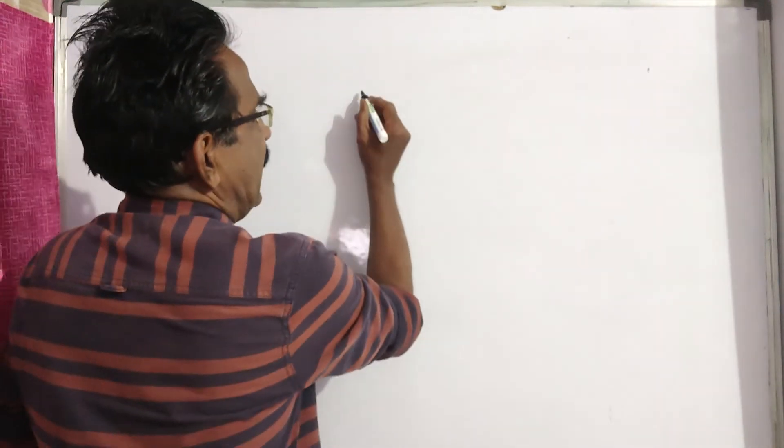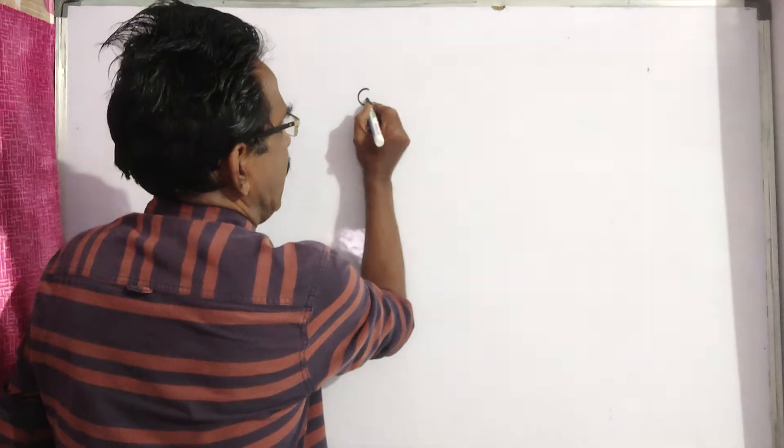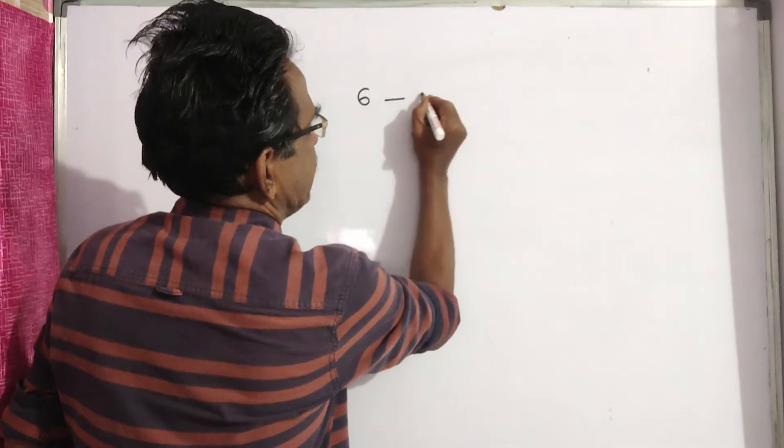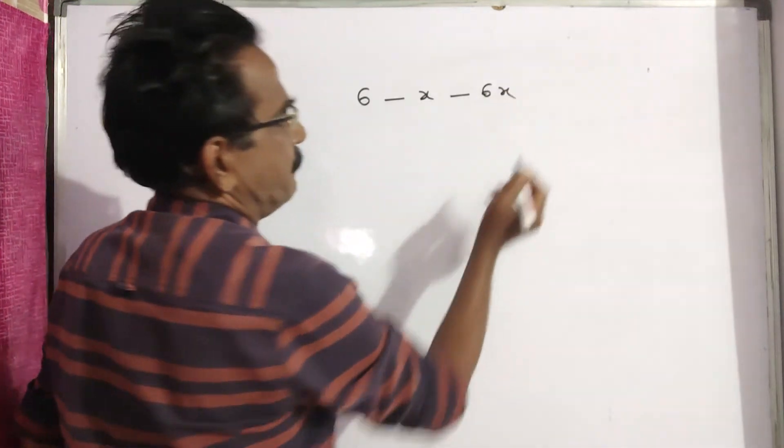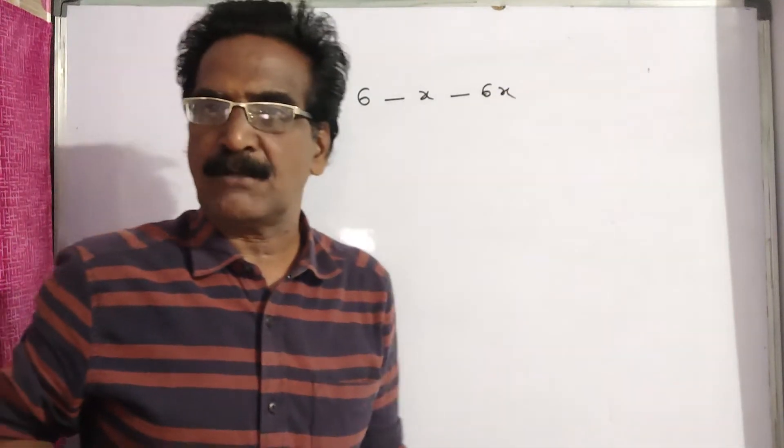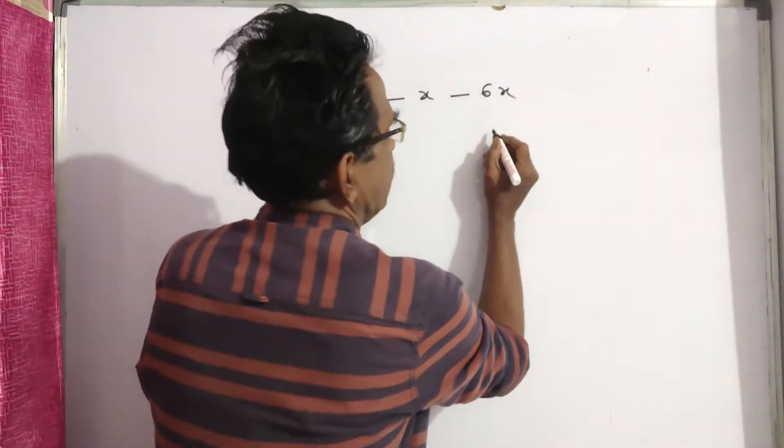See friends, the average money spent by 6 persons, say x. Then the total money spent by 6 persons is equal to 6x, 6 into x.